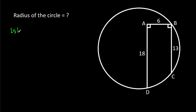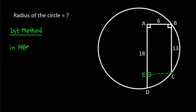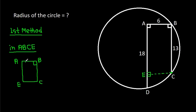So, the first method. From point C, if we make a perpendicular on AD, suppose this point is E, then in A, B, C, E, these three angles are 90 degrees. So this angle will also be 90 degrees. That means it will be a rectangle.